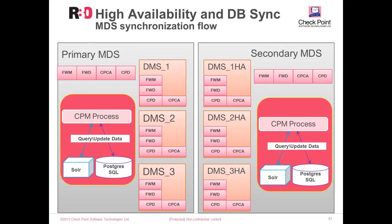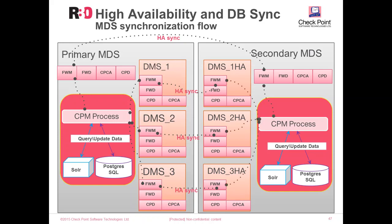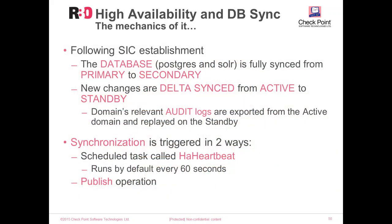On the primary MDS, the CPM process communicates with the FWM processes. FWM performs HA sync over SIC to the secondary MDS, sending delta changes from the PostgreSQL database. The FWM processes on the secondary MDS communicate with the CPM process, which forwards the information down to the secondary PostgreSQL database. Following SIC establishment, the Postgres and SOLAR databases are fully synchronized from primary to secondary. New changes are delta synced from active to standby. Domain-relevant audit logs are exported from the active domains and replayed on the standby domains. Synchronization is triggered either by a scheduled heartbeat task every 60 seconds or during publish operations.